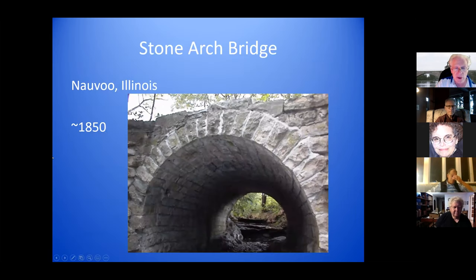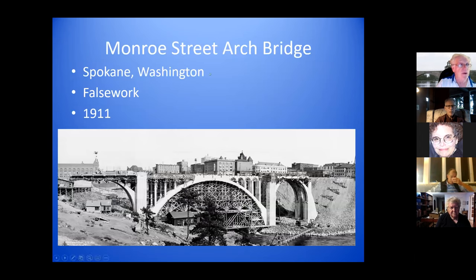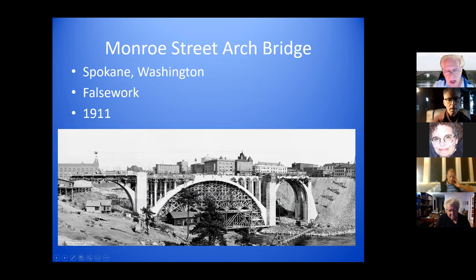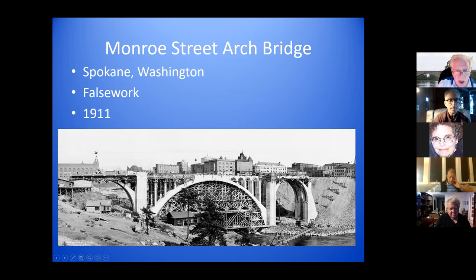This is a stone arch bridge built around 1850 in Illinois by the pioneers of the Church of the Latter-day Saints. This is the Monroe Street Bridge, an arch bridge. You can see the falsework here to get the arch together, the piers and roadways being built, the main arch in the middle, a smaller arch, and they're building either another arch — it will have at least three sections when completed.